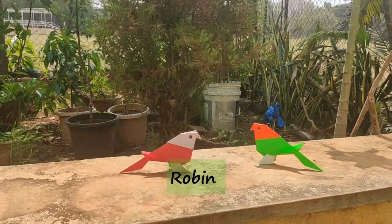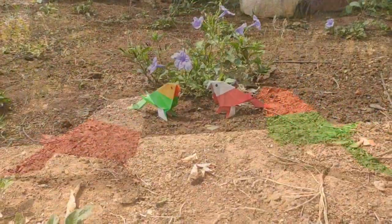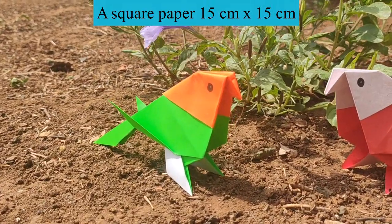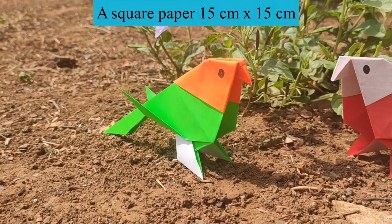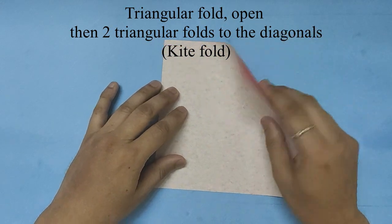Hello friends, today we are going to make a robin, a bird that can be made from a square paper 15 centimeters by 15 centimeters. We will first make a kite fold.